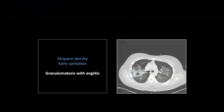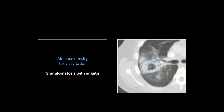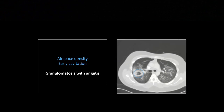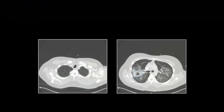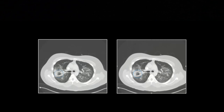Continuing with the destructive pneumonia phenomenon, here is a differential. There is clearly a focus of consolidation with a central early cavitation — you can see a cavity beginning to form. This could be destructive pneumonia, but don't forget your differential on airspace density: pus, blood, fluid, or cells. In this case, that's actually blood, so this is a case of Wegener's granulomatosis.